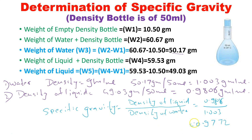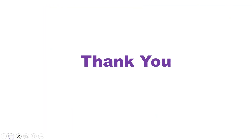The specific gravity value of 0.9772 is less than one, which means the liquid will float on water. If the value were greater than one, it would mean the liquid's density is higher than water and it would sink. So when the specific gravity is less than one, the liquid floats; when it is greater than one, it sinks. Thank you for watching — if you have any doubts, please comment below.